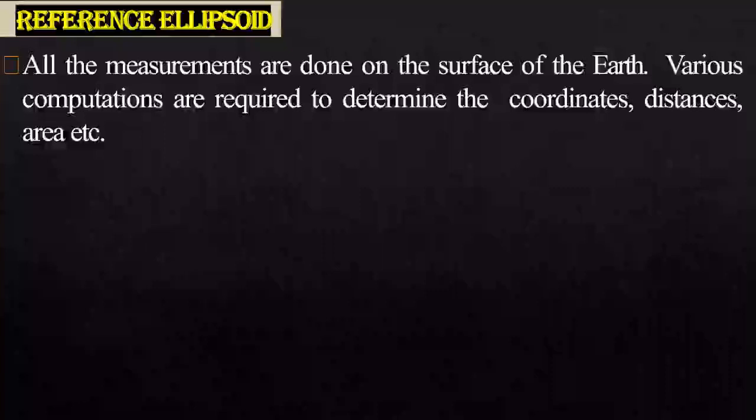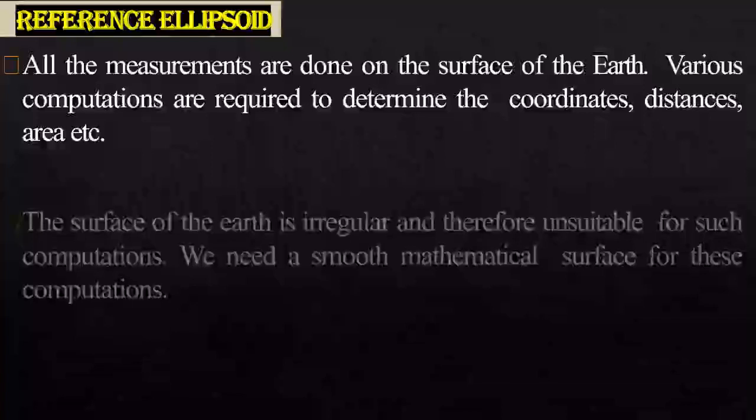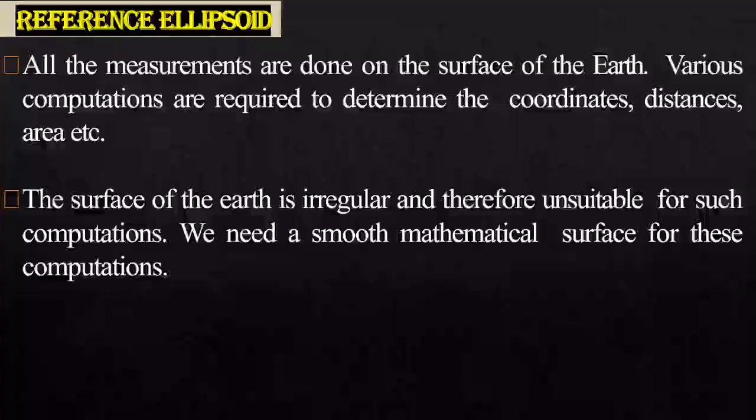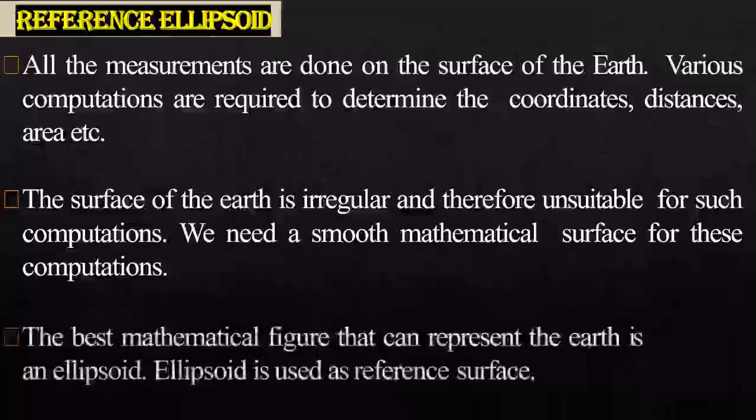What are reference ellipsoids? All measurements are done on the surface of the earth. Various computations are required to determine coordinates, distances, area, etc. The surface of the earth is irregular and therefore unsuitable for such computations — we need a smooth mathematical surface. The best mathematical figure that can represent the earth is an ellipsoid, so the ellipsoid is used as the reference.